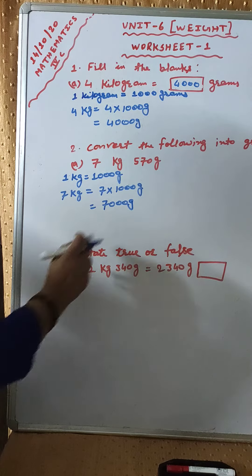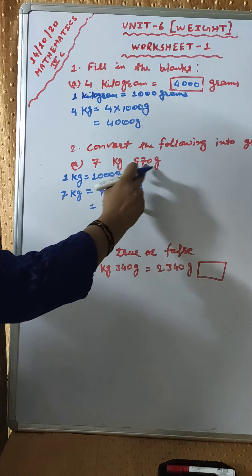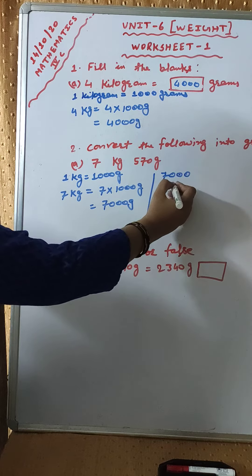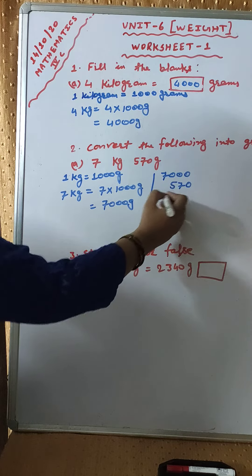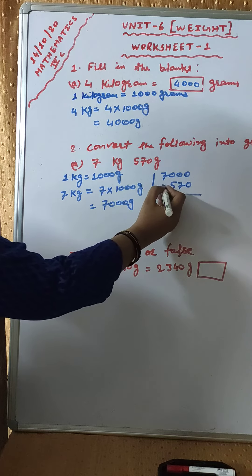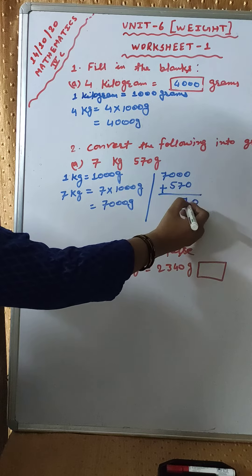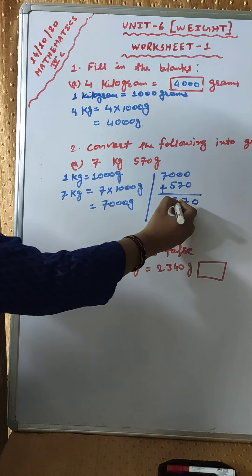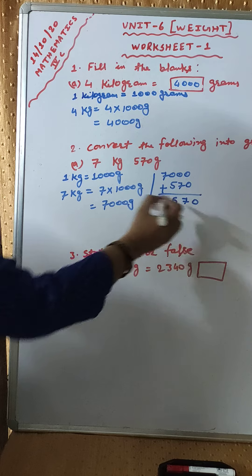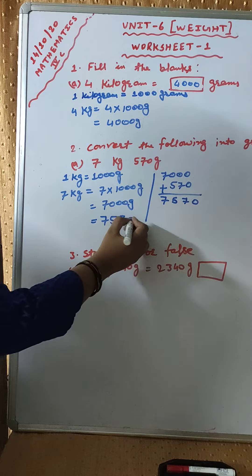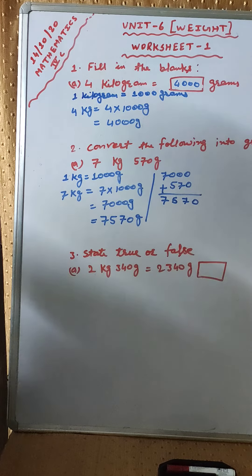Then after 7 kilogram equal to 7 into 1000 grams, that will be 7000 grams. Now we will add 7000 grams plus 570 grams. If you will add like this, then there will be no mistake. 0 plus 0, 0 plus 7, 7. 5 plus 0, 5. And here 7. That will be 7570 grams.